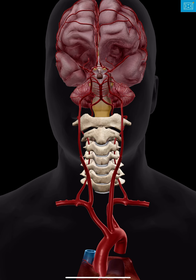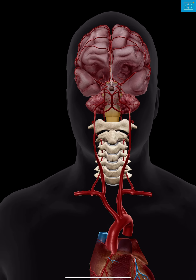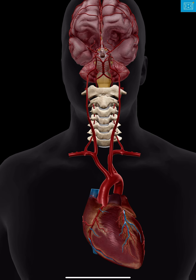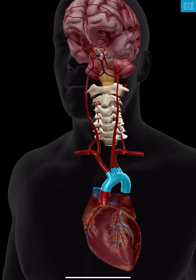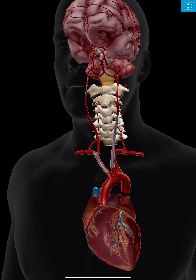To understand the Circle of Willis, you have to understand where the vessels come from. They come from our aortic arch — this region of the aorta highlighted in blue. There are two regions we'll focus on. Off the aortic arch, you have three branches: the brachiocephalic trunk, the left common carotid, and the left subclavian.